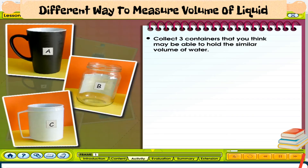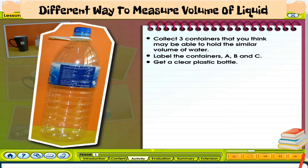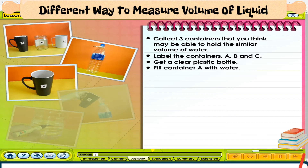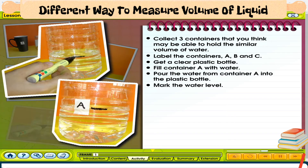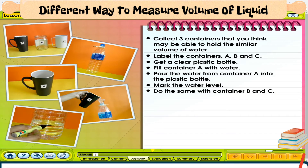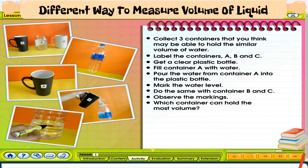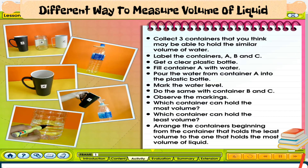Collect three containers that you think may be able to hold a similar volume of water. Label the containers A, B, and C. Get a clear plastic bottle. Fill container A with water and pour it into the plastic bottle. Mark the water level. Do the same with containers B and C. Observe the markings. Which container holds the most volume? Which holds the least? Arrange the containers from least to most volume.